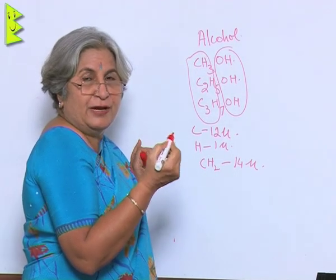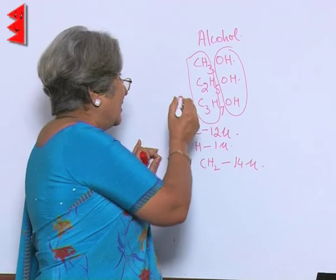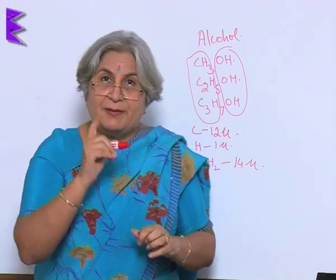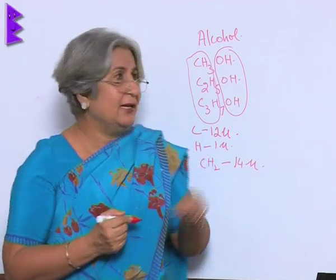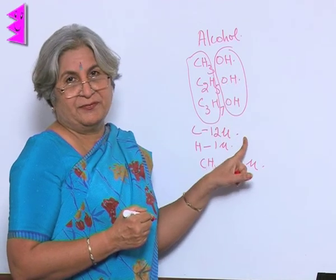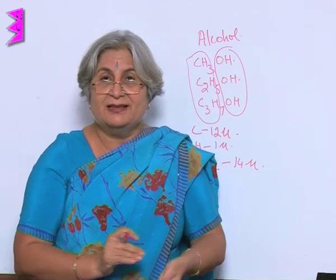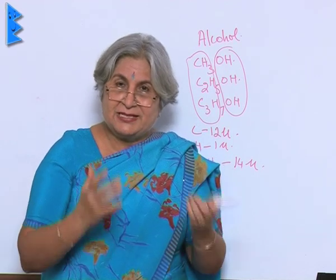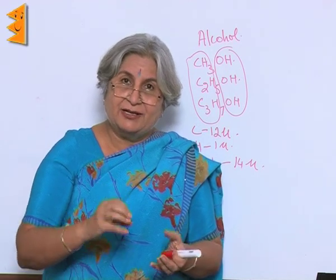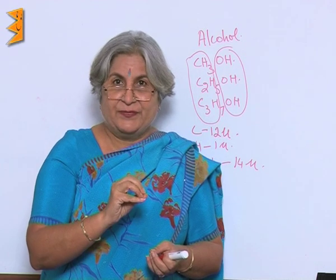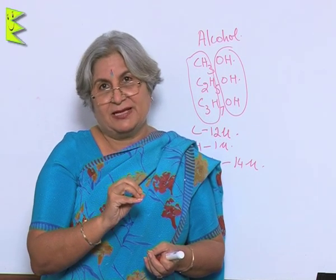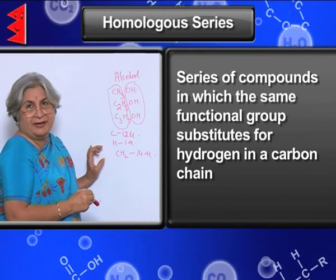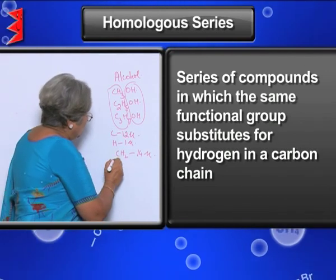The melting point and boiling point keeps on becoming higher and higher — it is in ascending order. But the chemical properties are the same because the functional group is the same. It is just like the siblings of a family may develop some differences in them, but yet the basic value system of a family will remain the same. So this is like belonging to the same family — this is called homologous series.